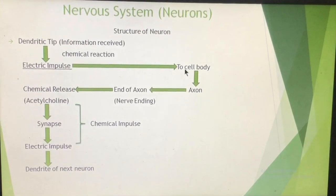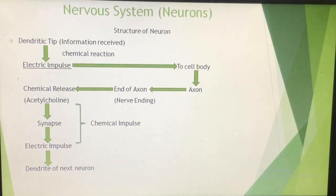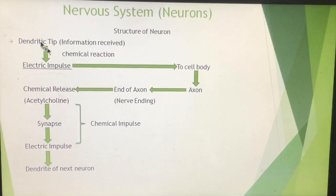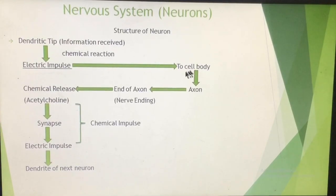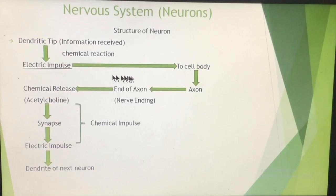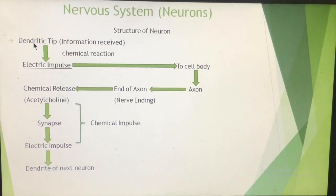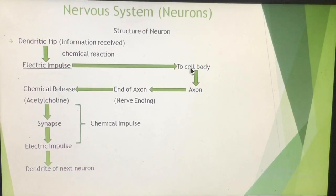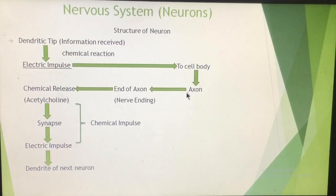The cell body is the main body of a neuron in which the nucleus is present. From the dendrite, the electric impulse enters the cell body. Then from the cell body, one nerve fiber arises — only one. Dendrites can be many, but this one nerve fiber that arises from the cell body is known as an axon. The axon carries the electric impulse away from the cell body.